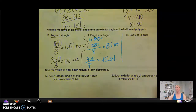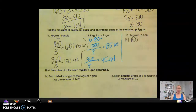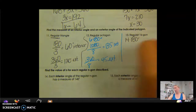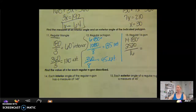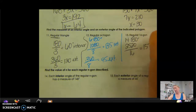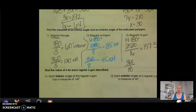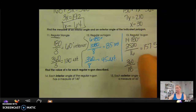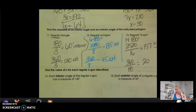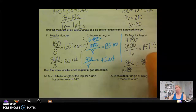One more — regular 16-gon: 16 minus 2 gives 14, multiply by 180 gives 2,520. Divide by 16 — each interior angle is 157.5 degrees. For exterior: 360 divided by 16 is 22.5 degrees.